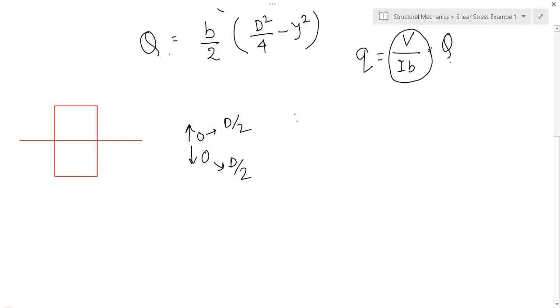So, at y equal to 0, the Q is maximum. As y equal to d by 2, Q becomes 0. So, from this equation, you see the equation is square parabolic.